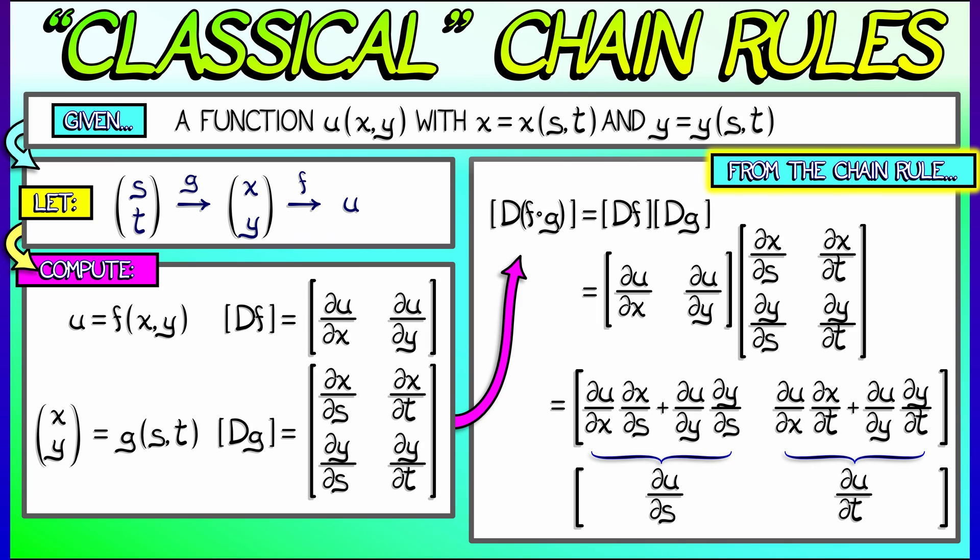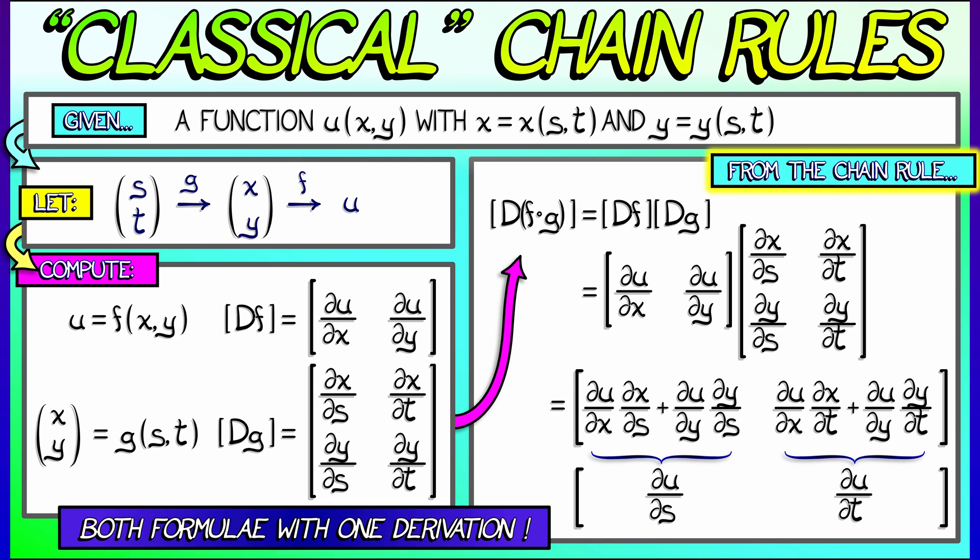That's it. One derivation gives both formulae. Matrix multiplication regulates what has happened. Everything flows from this one chain rule.